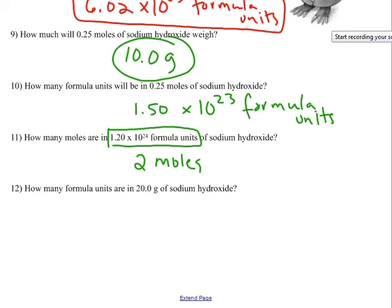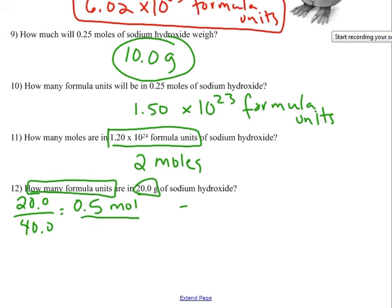Number 12, how many formula units are in 20 grams of sodium hydroxide? And here's where this starts to get a little more complex. 20 grams of sodium hydroxide, you might recognize 20 grams, is half of 40. So this is 0.5 of a mole. Because 20 divided by 40 is half of a mole. But the question is not asking how many moles, it's asking how many formula units. You know that 1 mole has 6.02 times 10 to the 23. Now we have half of a mole, so that's going to work out to 3.01 times 10 to the 23 formula units. So you can see these problems can start to get a little more complex.